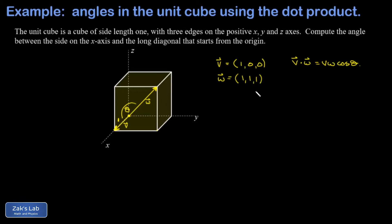Before we can use that, we have to find the magnitudes of these vectors. The magnitude of v is the square root of the sum of the squares of the components: 1 squared plus 0 squared plus 0 squared. Of course, v has a magnitude of 1—it's just one of the edges of the unit cube. The magnitude of w, again the square root of the sum of the squares of the components, is square root of 3.